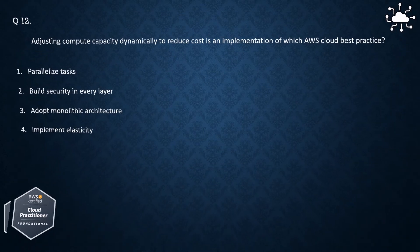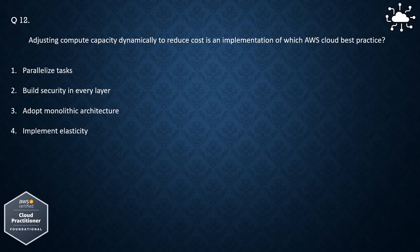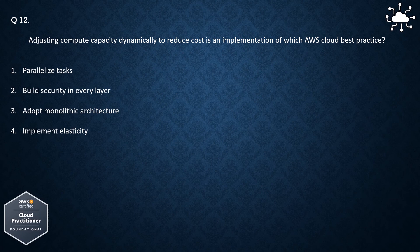Question 12. Adjusting compute capacity dynamically to reduce cost is an implementation of which AWS Cloud best practice? 1. Parallelize Tasks, 2. Build Security in Every Layer, 3. Adopt Monolithic Architecture, 4. Implement Elasticity. The correct answer is Implement Elasticity.